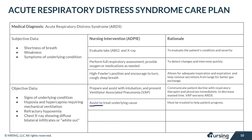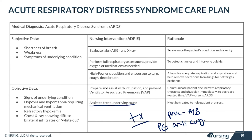Assist in treating the underlying disease depending on what it is. If the patient has pneumonia, give them antibiotics. If the patient has a PE, administer appropriate anticoagulants such as heparin. The underlying cause must be treated and routinely reevaluated for the patient to progress.